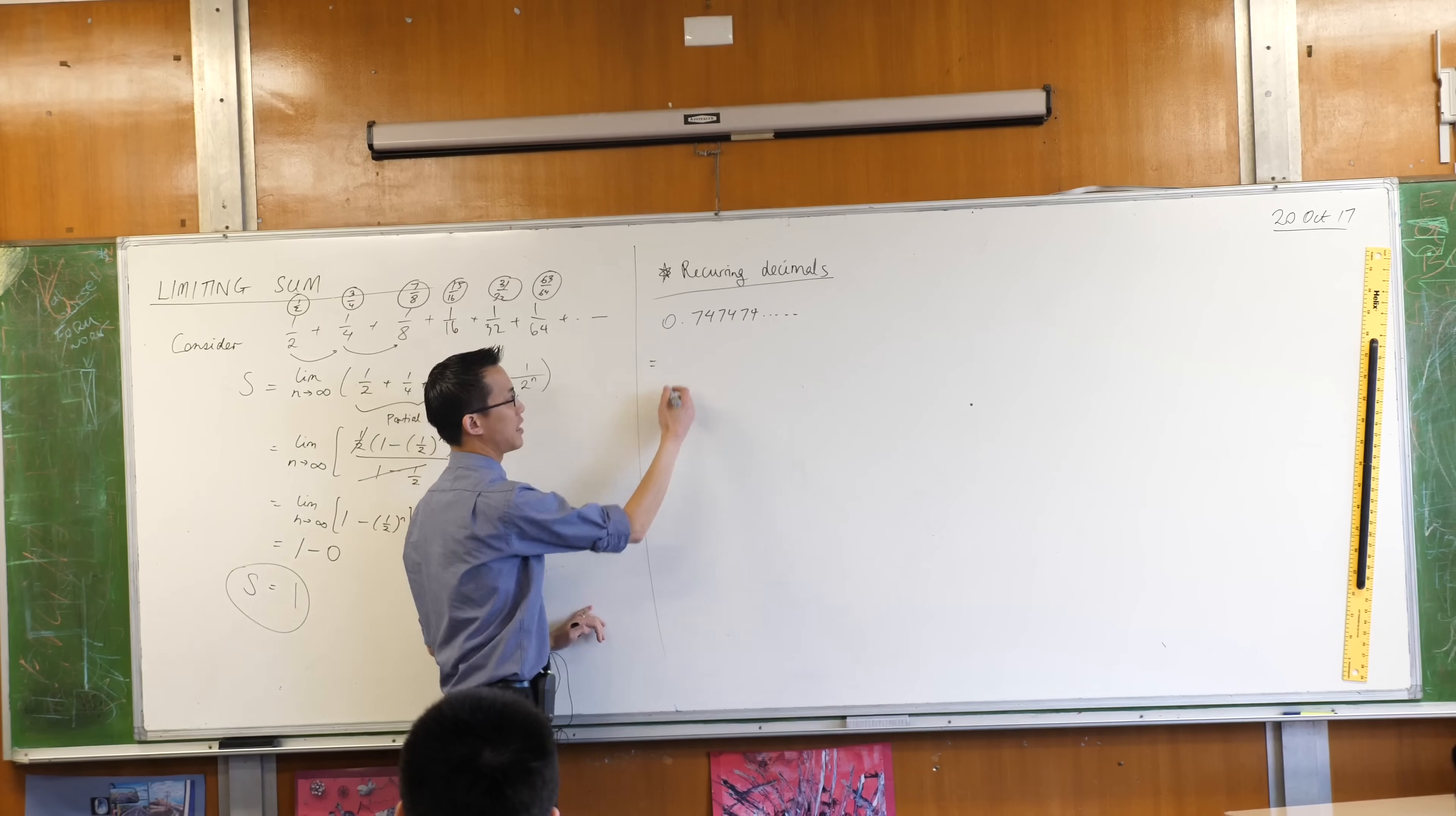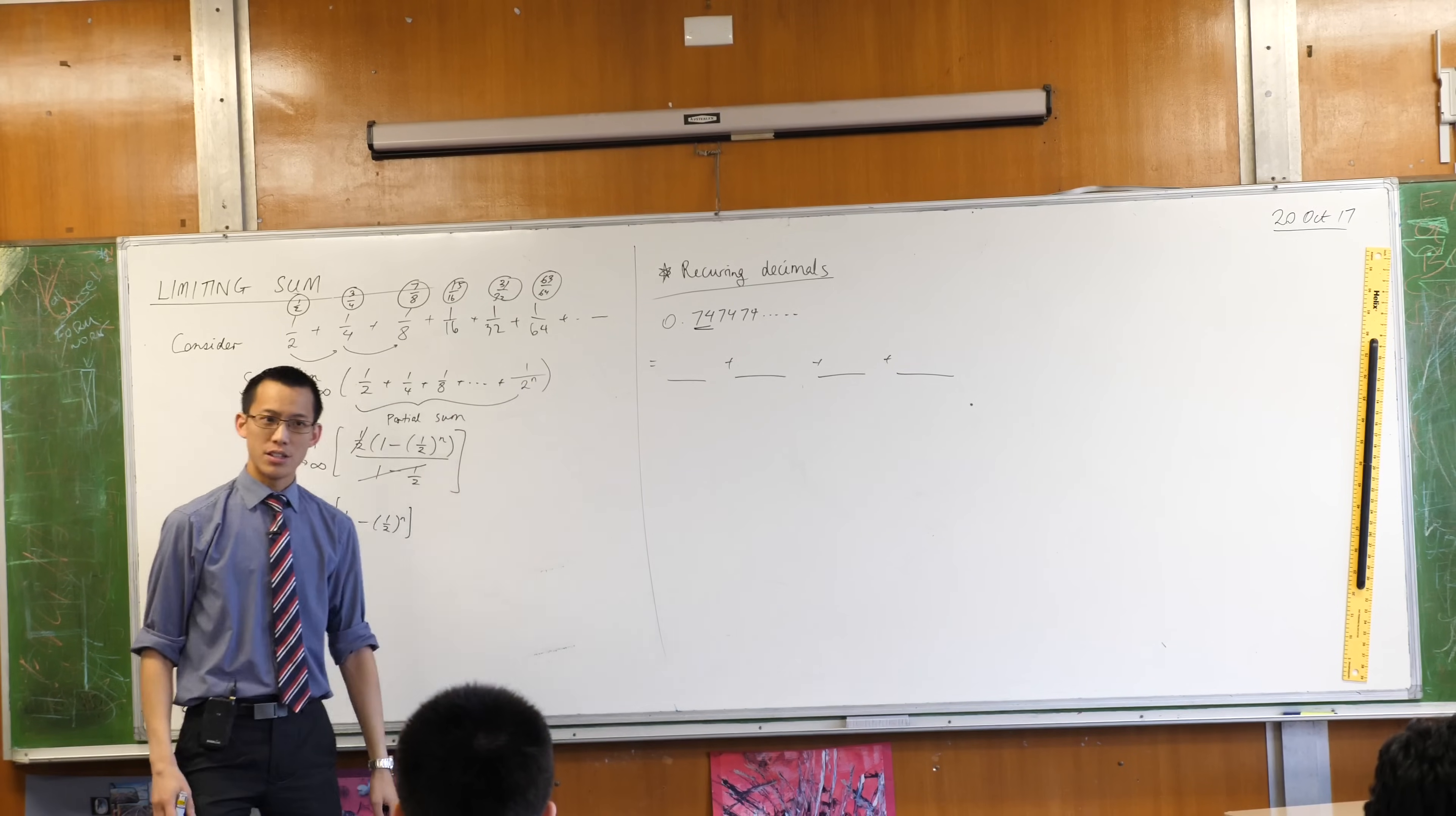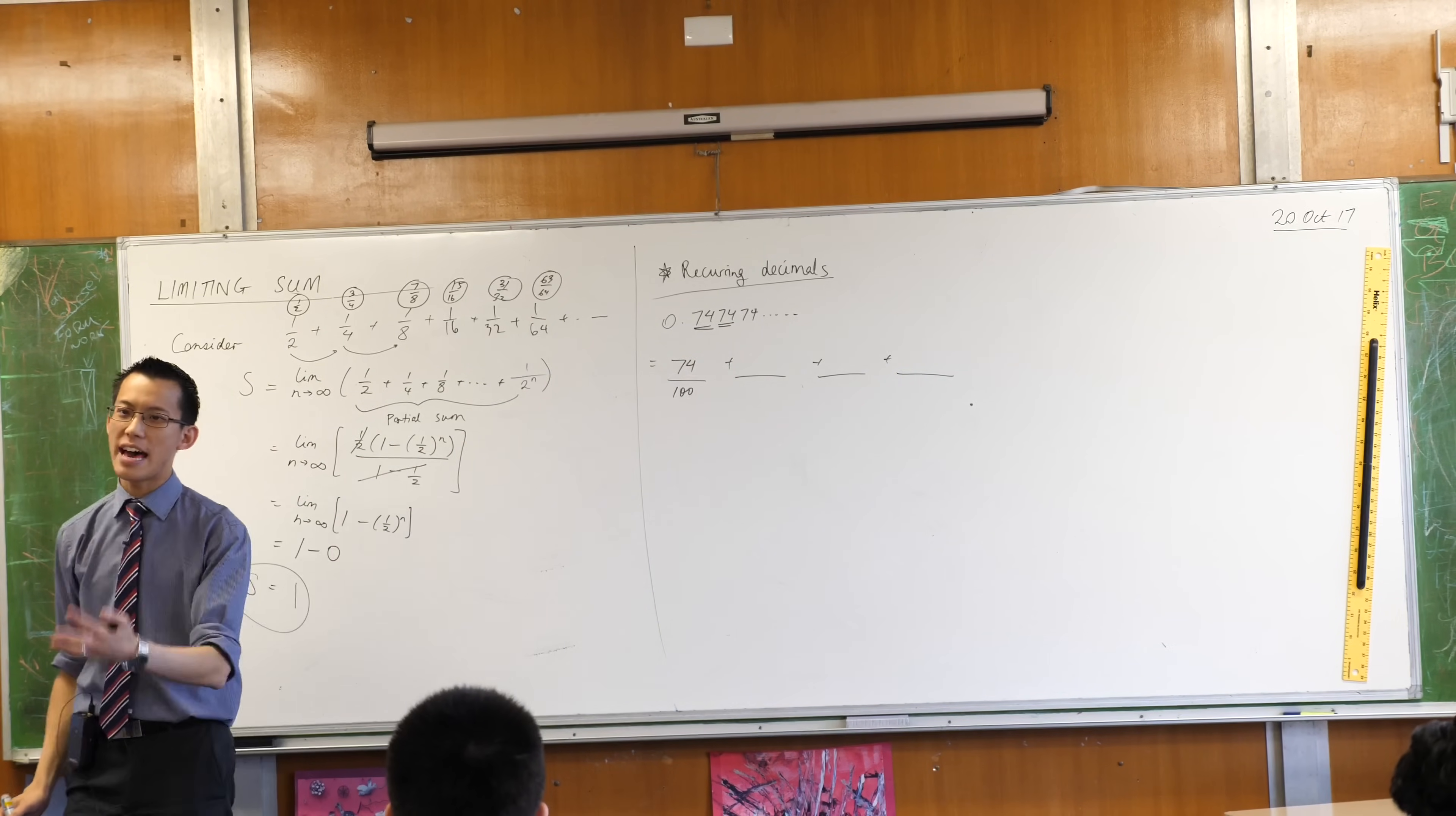So what I'm suggesting is this is made up of something plus something plus something plus something and you get smaller by a common ratio each time. So for instance, see if you have a look at these two digits here. 0.74. What is that as a fraction? 0.74. It's 74 over 100. 74 hundredths. Well that's the first piece. If you have a look at the next bit. 0.0074. What's that as a fraction?